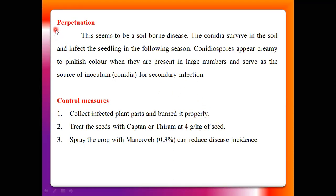Regarding perpetuation — as already discussed in the life cycle — primary infection takes place through the use of infected seeds and infected plant parts in the soil. Secondary infection is via conidia, which are disseminated from infected plants to healthy plants through wind or air currents.